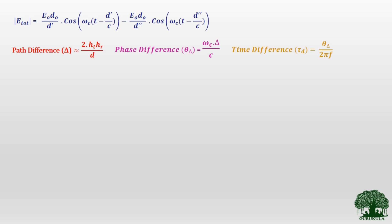Finally, we found out the different terms — we found out what the E total is, the total E field received at the receiver side, which has two terms: one is the E field for the line-of-sight signal and another is the E field for the reflected wave signal. The minus between these two terms is because of the reflection coefficient — by the loss of reflection from a dielectric, the reflection coefficient is given as minus one.